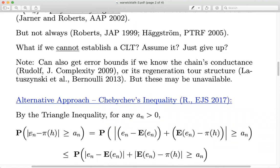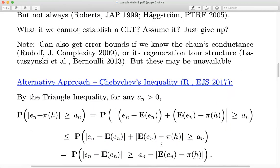Here's the first trivial calculation. We're interested in the probability that E_n is off from π(h) by more than some positive number a_n. We can write this as E_n minus its expected value, plus its expected value minus π(h) — the bias — and by the triangle inequality the absolute value is bounded by the sum of the two absolute values. So bounds on error decompose into bounds on the deviation from expected value plus the MCMC bias.